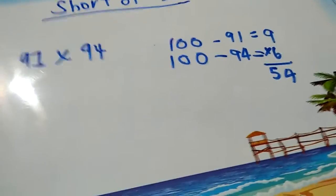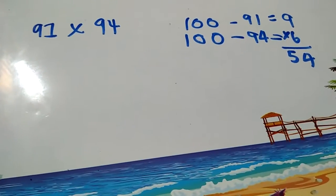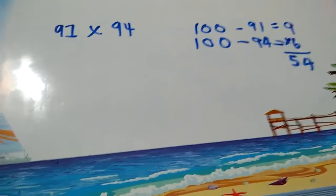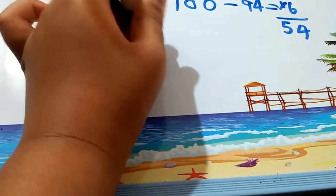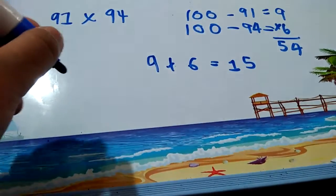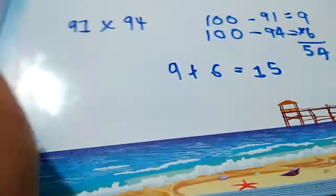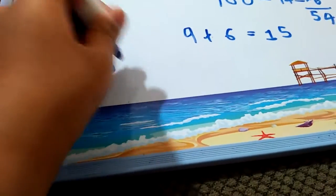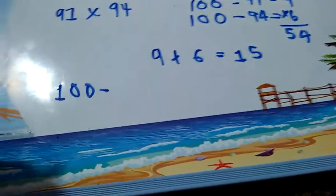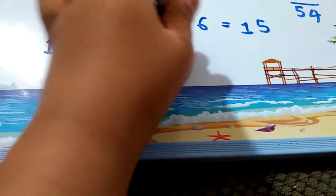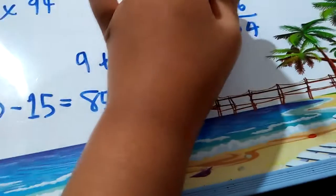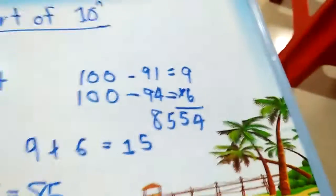Then multiply both of them and you get 54. To get this, add 9 and 6, you will get 15. Subtract 15 from 100, you get 85, and put this 85 next to the 54 to get the product 8554.